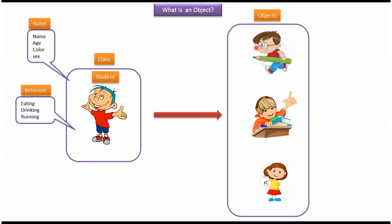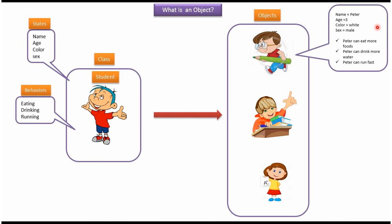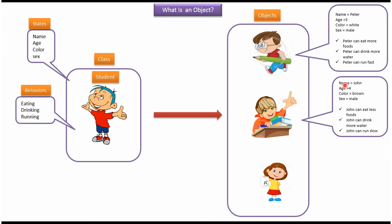This is the first student object: name is Peter, age is three, color is white, sex is male. Peter can eat more foods, Peter can drink more water, and Peter can run fast. This is the second student object: name is John, age is four, color is brown, sex is male.